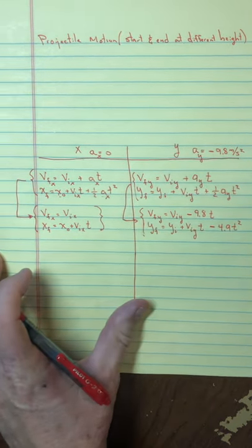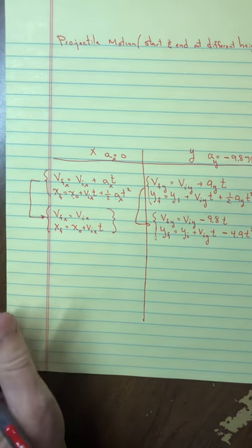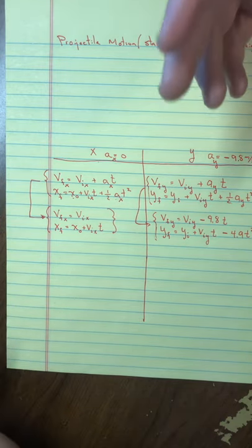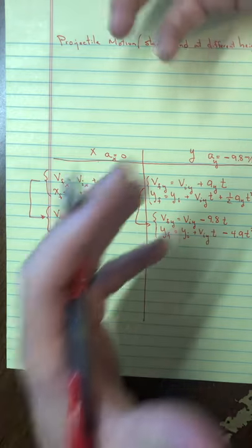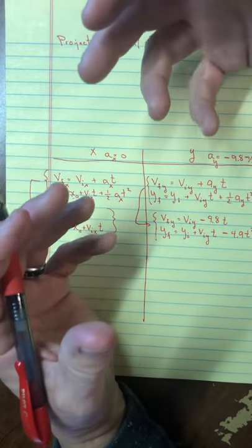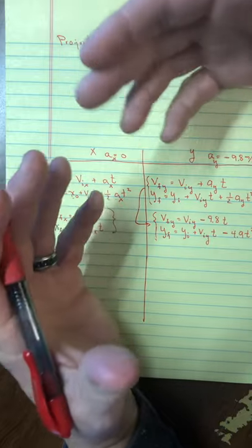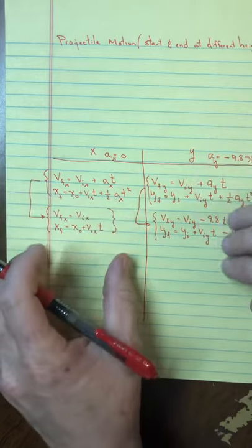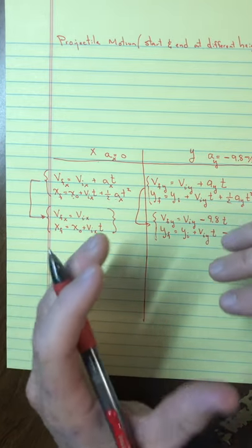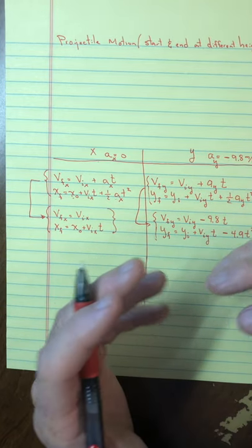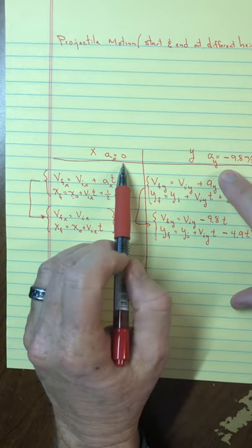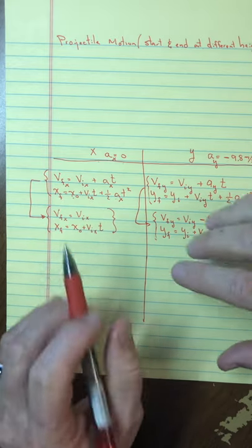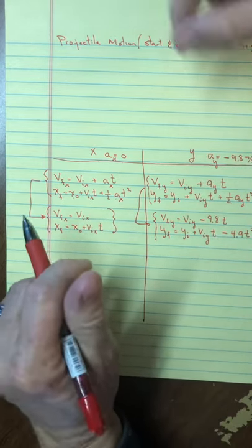That's my first thinking, and I've barely read the problem yet. All I've read is that first line: the roommate is throwing the keys down from the balcony and we're ignoring air resistance. The fact that it's two dimensions — I made two columns. The fact that I'm ignoring air resistance and there's only gravity — I know these accelerations. I know they're constant, so I write down the constant acceleration equations and apply them. That's what the first sentence has given me.